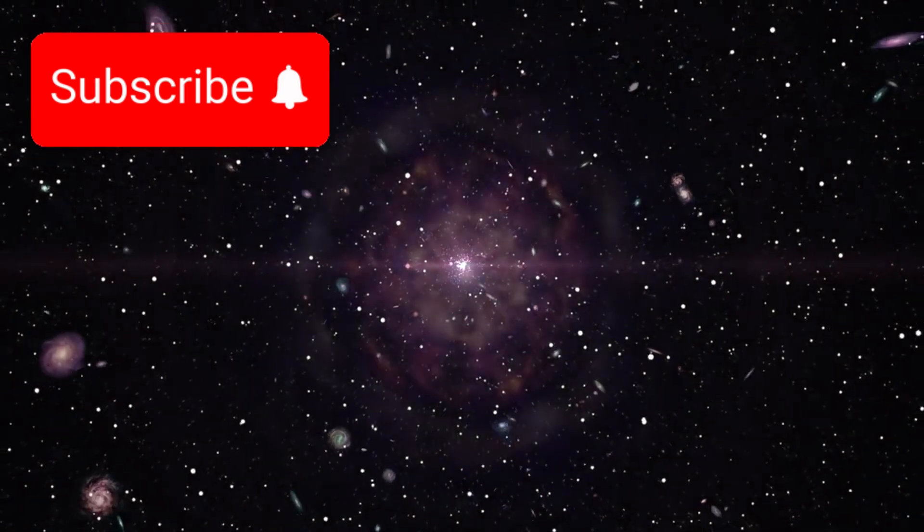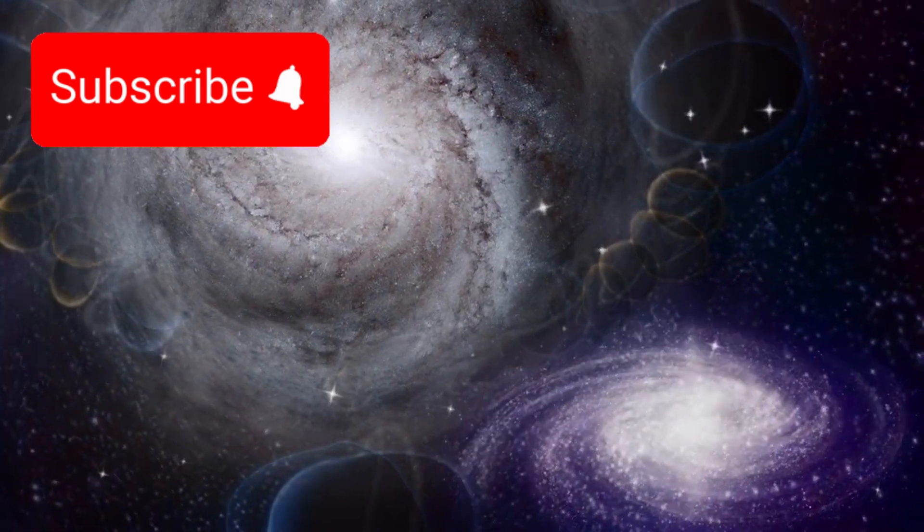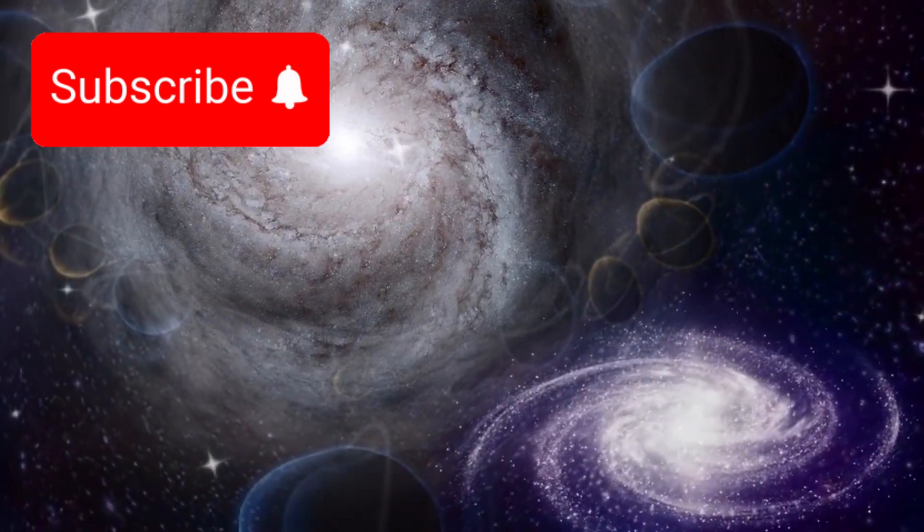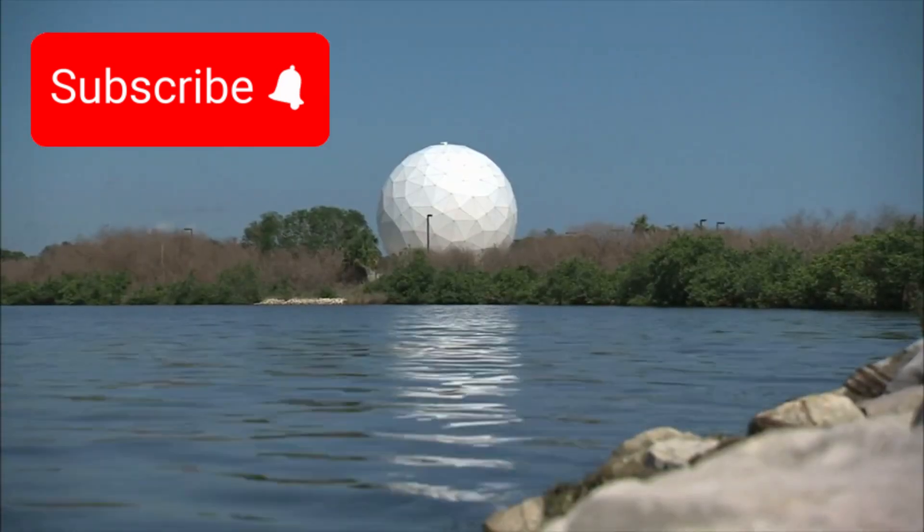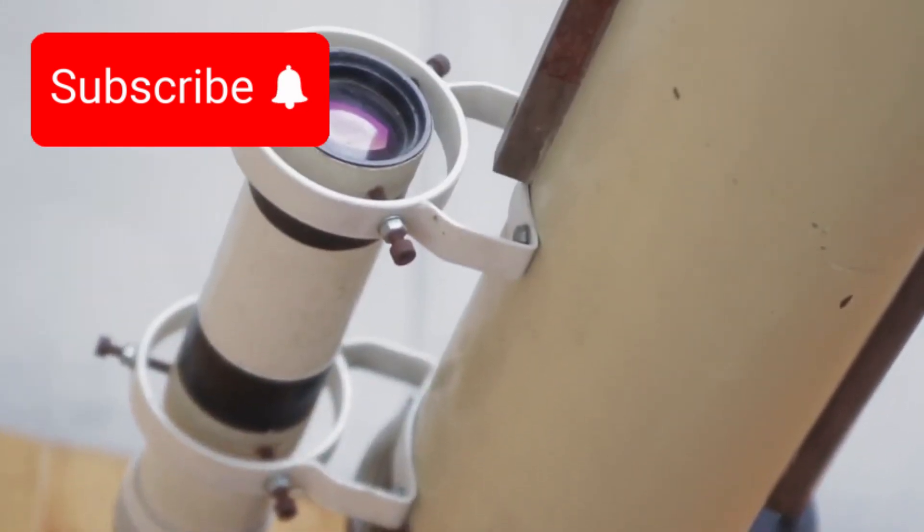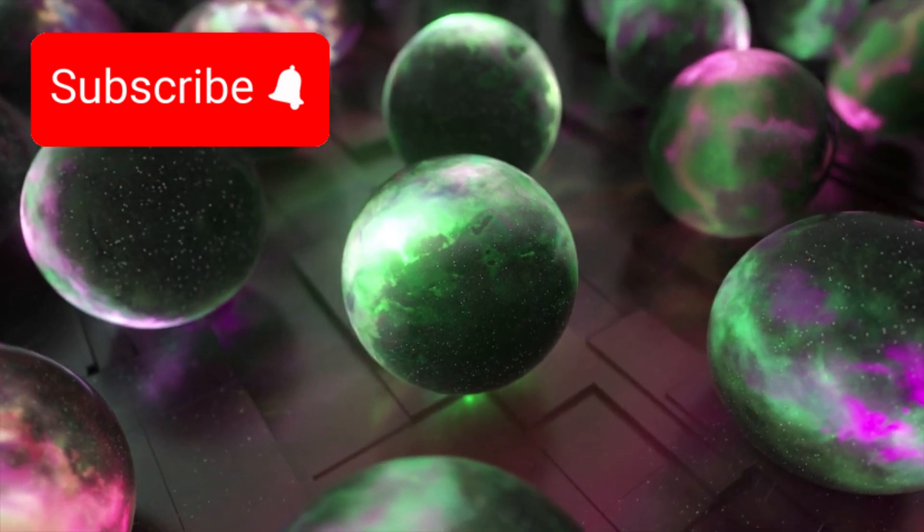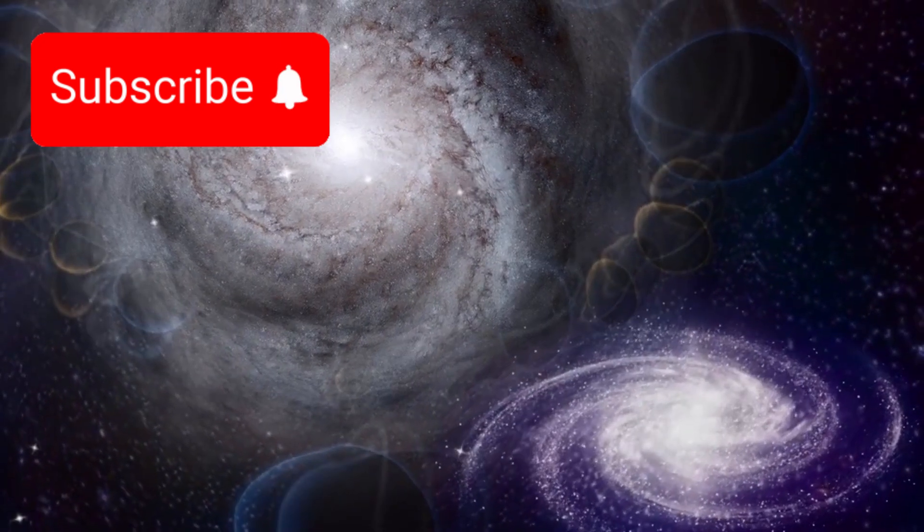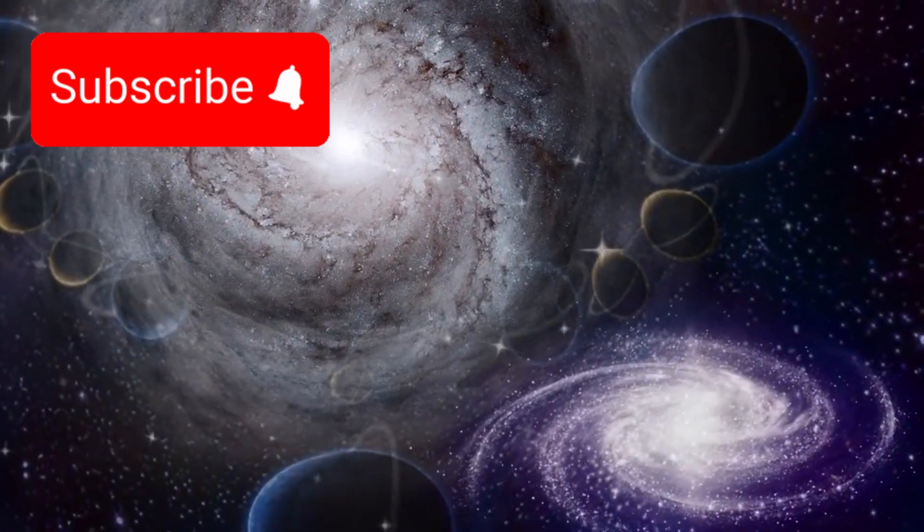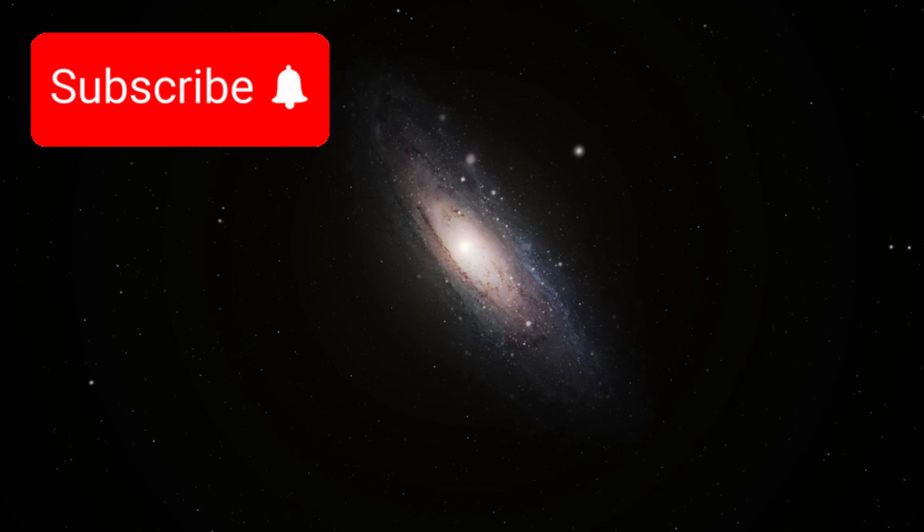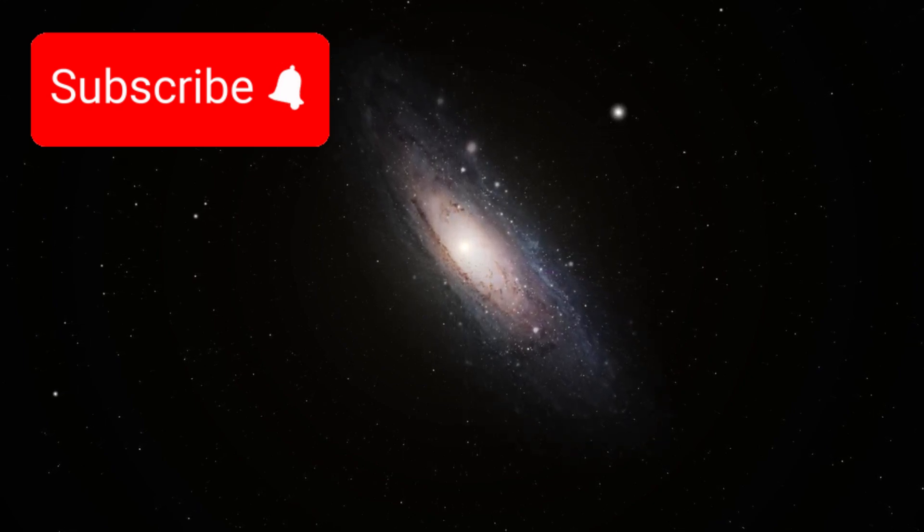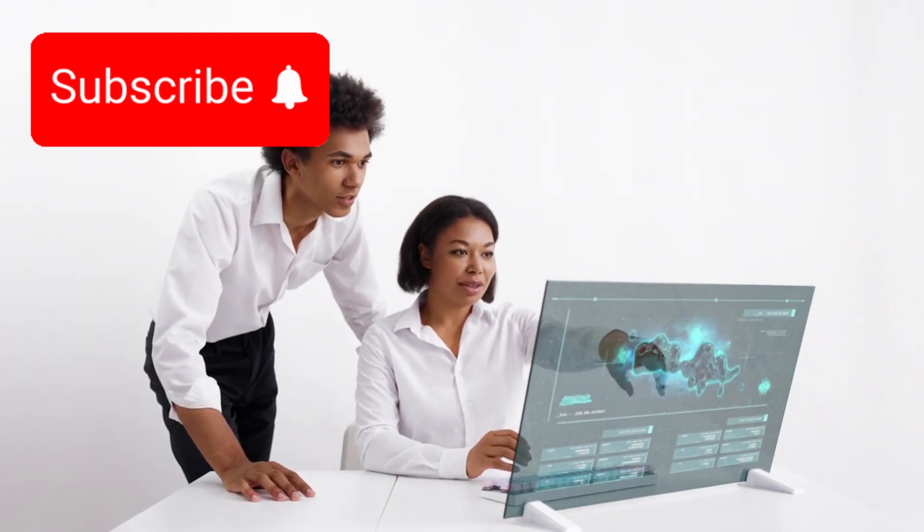But the story doesn't stop here. What Webb has revealed next is even more astonishing: galaxies from the dawn of time, challenging everything we believed about the Big Bang and the early universe. James Webb Telescope challenges the Big Bang with ancient galaxies. The James Webb Space Telescope isn't just changing how we see the universe, it's challenging the very foundations of cosmology. In one of its most revolutionary discoveries yet, Webb has spotted galaxies from just 300 to 500 million years after the Big Bang. These aren't faint, tiny structures either; some of them are up to 10 times larger than the Milky Way. This discovery has rocked the scientific community.